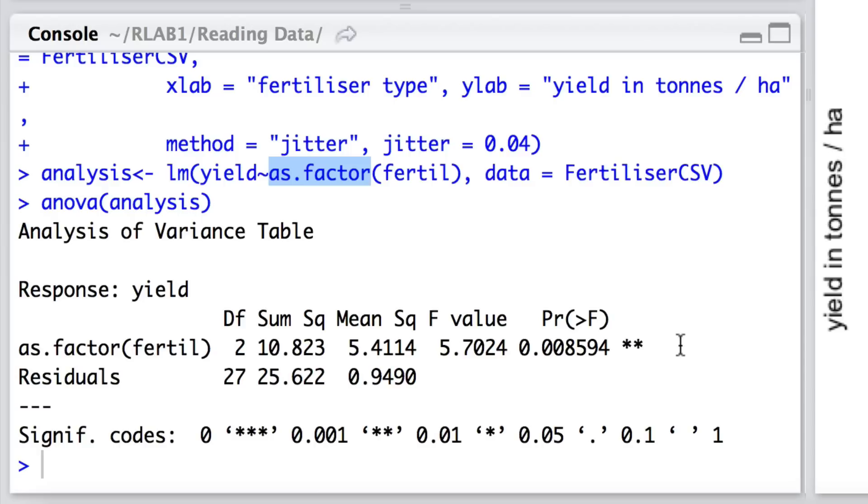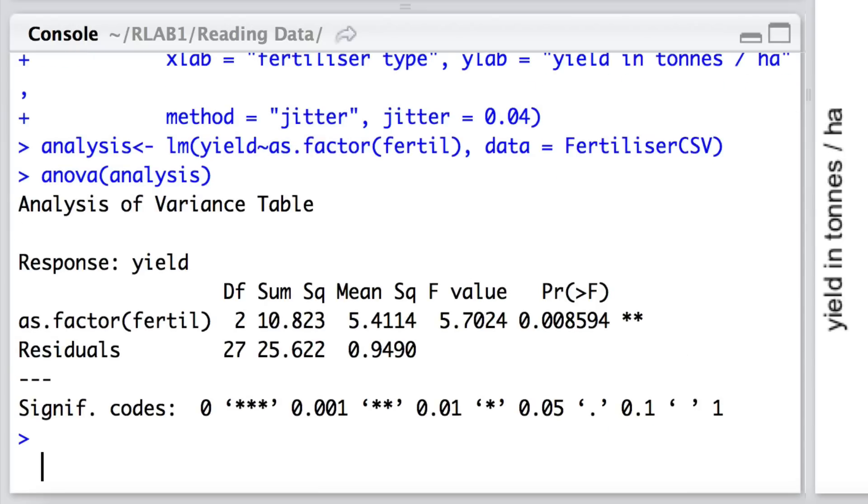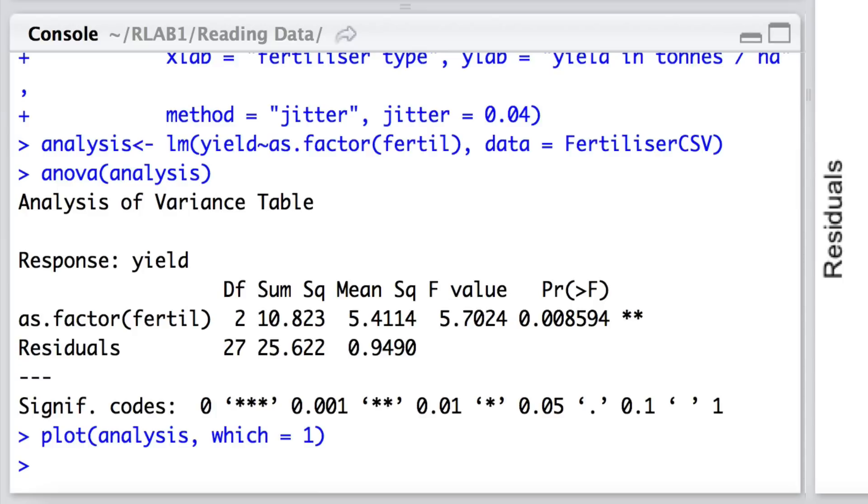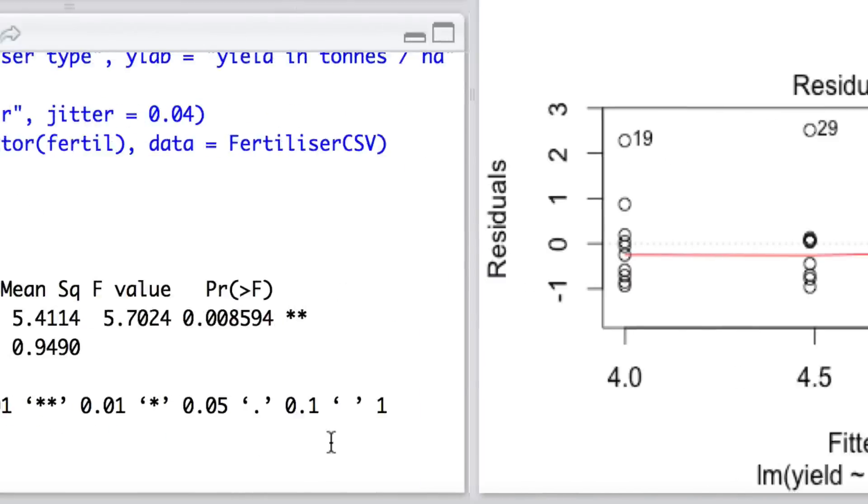Now, before we can really confirm that interpretation, what we really need to do is to look at the plots to see whether in fact our assumptions underlying the fit of the analysis of variance model are indeed valid. So let's have a look first of all at the plot of the residuals. And here what I'm saying is plot, and this object of analysis has many different features including an ability to plot the residuals, and that's the very first plot. So I'm saying which equals 1.